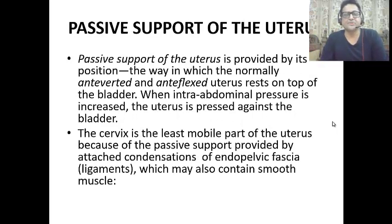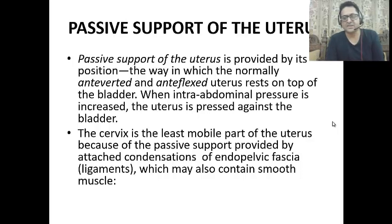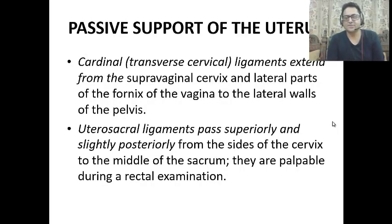The passive support is provided by the normal anteverted and antiflexed position of the uterus, which rests on top of the bladder. The cervix is the least mobile part of the uterus due to passive support from the endopelvic fascia ligaments. The main passive supports are the cardinal ligament (transverse cervical ligament) and the uterosacral ligaments.